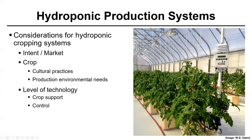From the crop standpoint, one needs to determine what are the cultural practices that need to be taken to successfully produce the hydroponic crop, and what is the production environment that needs to be maintained or manipulated to successfully produce the hydroponic crop. From that standpoint, one needs to determine what is the level of technology needed to support that crop and what type of control is needed. And that's what I hope to discuss with you today.